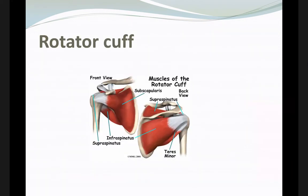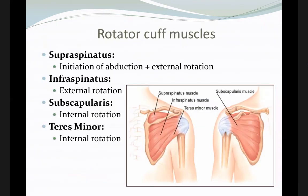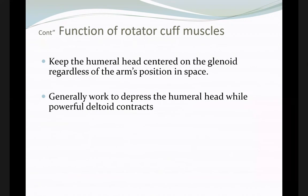Returning to the rotator cuff: the main goal of these muscles is to initiate minimal motion and mainly to stabilize the shoulder. Their function is primarily to keep the humeral head contained in the glenoid — adding stability in any arm position.